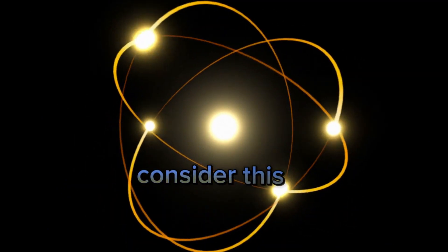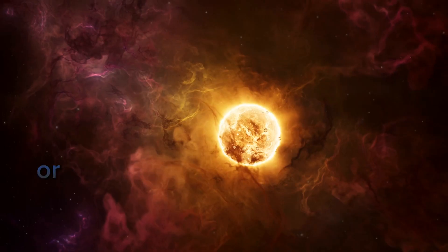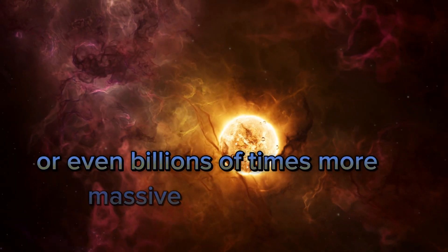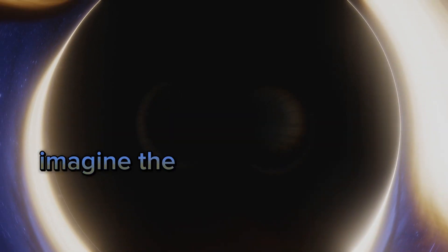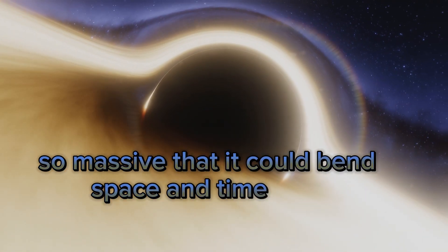Consider this: supermassive black holes, found at the centers of galaxies, can be millions or even billions of times more massive than our sun. Imagine the gravitational pull of a black hole so massive that it could bend space and time itself, creating a gravitational field so strong that not even light can escape it.